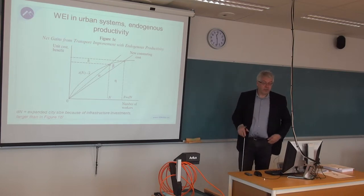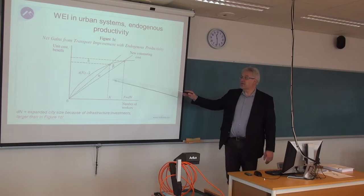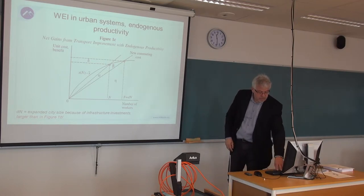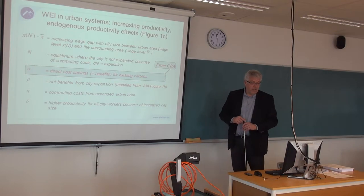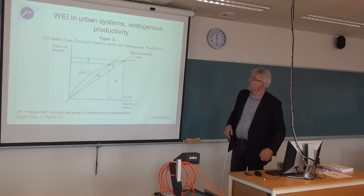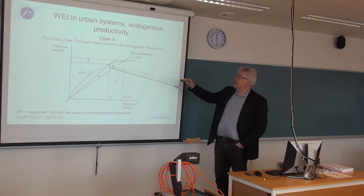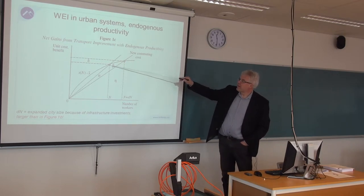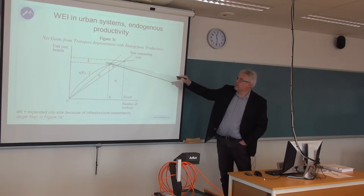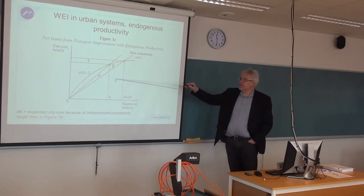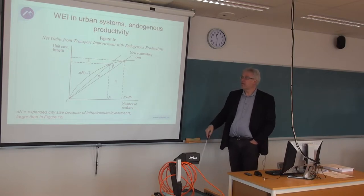If you look back to the lecture notes and follow the steps, there is also an illustration with a constant wage gradient, which is the point of departure for the discussion. The added value from wider economic impacts is connected to this delta here, and also to this area beta in this triangle. These two represent the wider economic impacts, whereas eta represents the increased costs covered by the commuters.